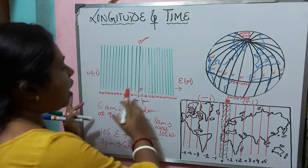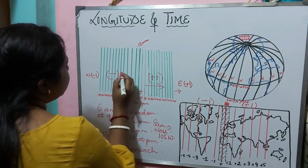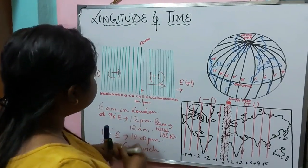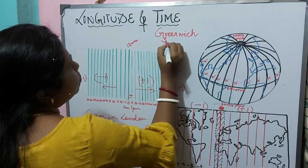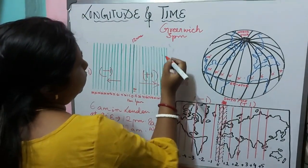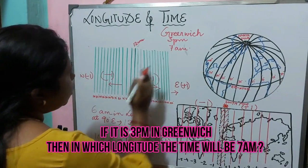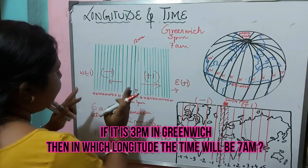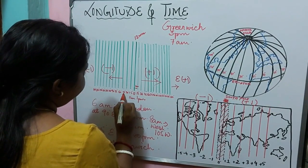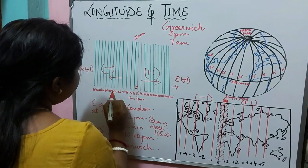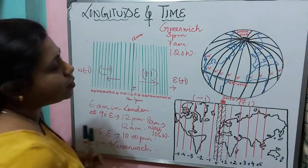As we move towards the east, one hour is added; as we move towards the west, one hour is subtracted. I hope all of you understood. Now let me ask you a question. Suppose you know the time of Greenwich is 3 pm. At what longitude will the time be 7 am? Since the time is reducing, we are going west: 3 pm, 2, 1, 12, 11, 10, 9, 8, 7 am — that means 120 degrees west.